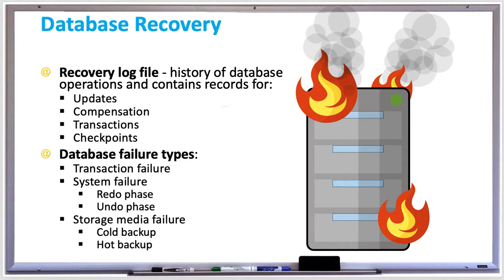The log contains update records, which log that a transaction's data has changed or updated. It also tracks compensation records, or undo records, which log that data has been rolled back. It also logs transaction records, which log the start, commit, and rollback of a transaction.